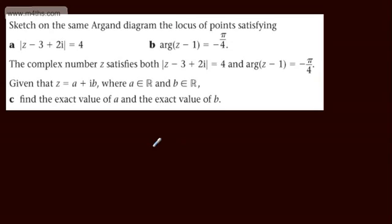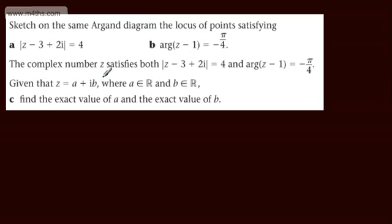In this question, we're asked to sketch on the same Argand diagram the locus of points satisfying A, the modulus of z minus 3 plus 2i is equal to 4, and B, the argument of z minus 1 is equal to minus π/4. We're told the complex number z satisfies both conditions. Given that z equals a plus ib, where a and b are real numbers, in part C we need to find the exact values of a and b.